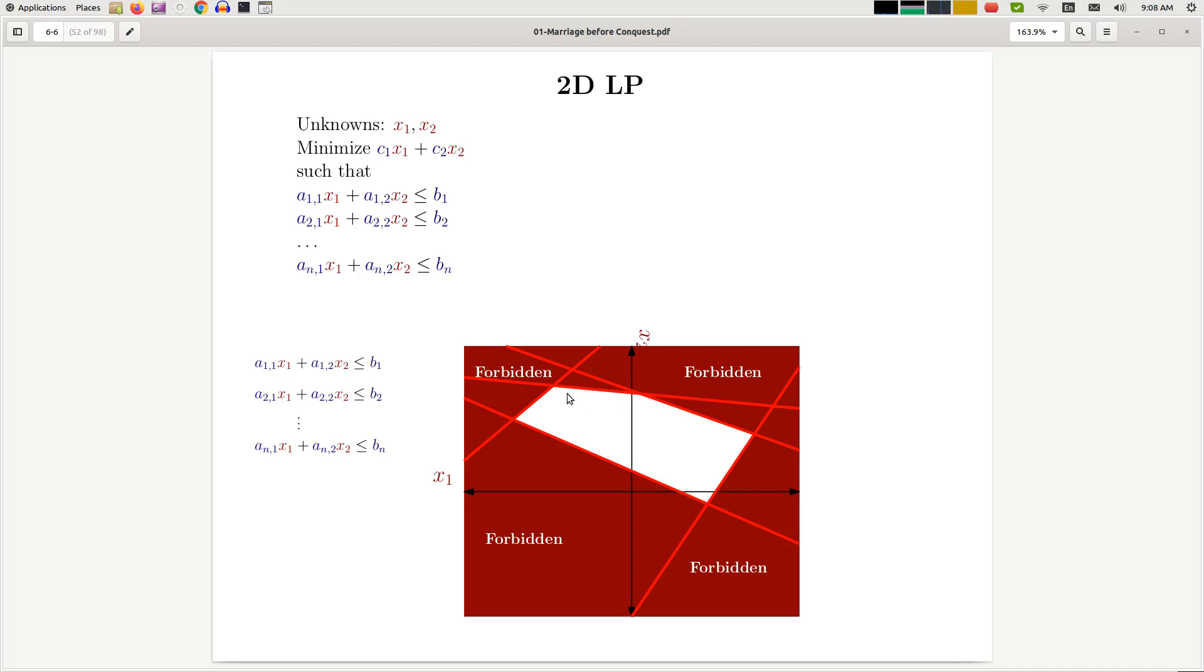In the exercise classes, we're going to prove that this feasible region is actually convex. So this picture is not misleading—it actually looks like a convex region because it is convex, and we're going to prove it in class.